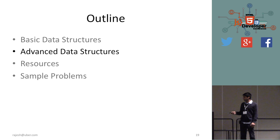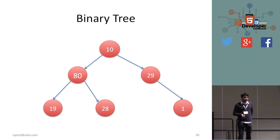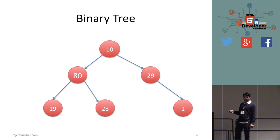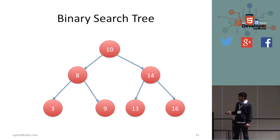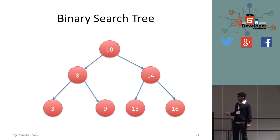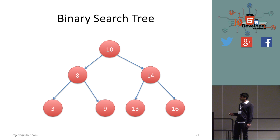The first advanced data structure is a binary tree. A node has one left child and one right child, each node has a parent node, and the root node's parent is nil. A binary search tree is also a binary tree but with an extra property: all left children are less than the node. Looking at 10: nodes 8, 3, 9 are all less than 10. And all right children are greater — 14, 13, 16 are all more than 10. This holds for every node.